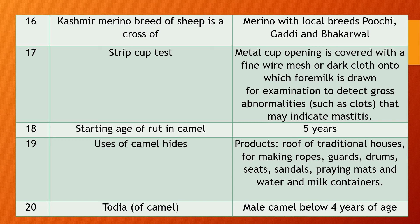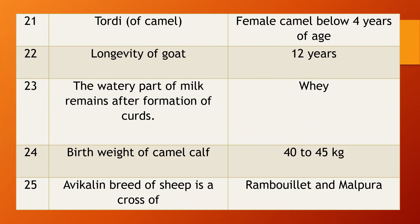Question 20. Toria — it is a local term for a type of camel. Toria is a male camel below 4 years of age. Question 21. What is Torii? It is also a local term for camel. Torii is a female camel, while Toria is a male camel below 4 years of age. These are the local terms.